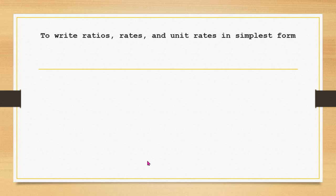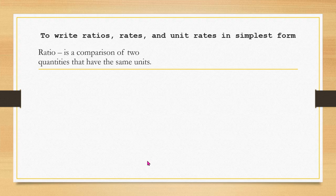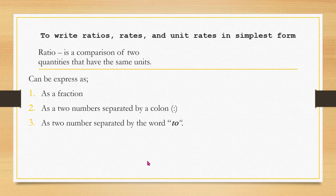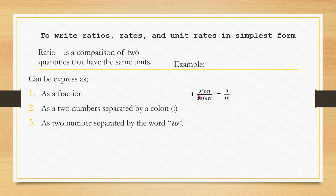Let's first define what a ratio is. A ratio is a comparison of two quantities that have the same units. A ratio can be expressed as a fraction, as two numbers separated by a colon symbol, or as a number separated by the word 'to.' For example, with 8 feet and 10 feet — both the same unit — this can be written as 8 over 10.